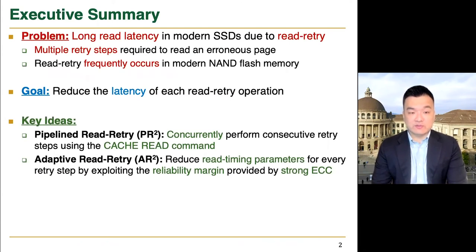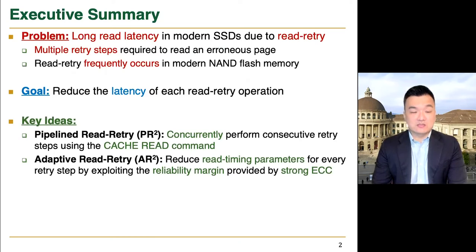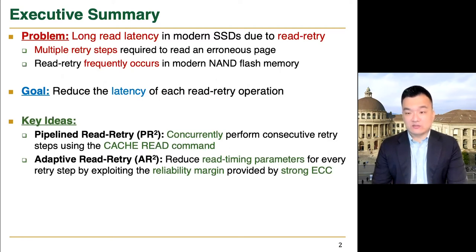First, we introduce a pipeline to read retry, PRScare in short, that concurrently performs consecutive retry steps using the advanced cache read commands. Second, we introduce adaptive read retry, ARScare in short, that reduces the read timing parameters for every retry step by exploiting the reliability margin provided by strong error correcting codes.